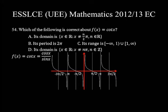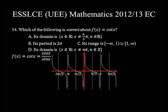Let's check which choice is correct. Choice A: Its domain is x ∈ ℝ such that x ≠ n/2 · pi, where n ∈ ℝ. But n/2 · pi is the point where the graph crosses the x-axis, so it is part of the domain. Choice A is not correct. Choice B: Its period is 2pi. The graph repeats itself at the interval 0 to pi, so the period is pi, not 2pi. Choice C: Its range is (−∞, 1) ∪ (1, ∞). The graph stretches upward and downward indefinitely, so all values of y are in the range — the range is all real numbers. Choice C is not true. Choice D: Its domain is x ∈ ℝ such that x ≠ n·pi, where n is an integer. The graph is asymptotic to all values of n·pi, so n·pi is not in the domain. Choice D is correct. The correct answer is choice D.